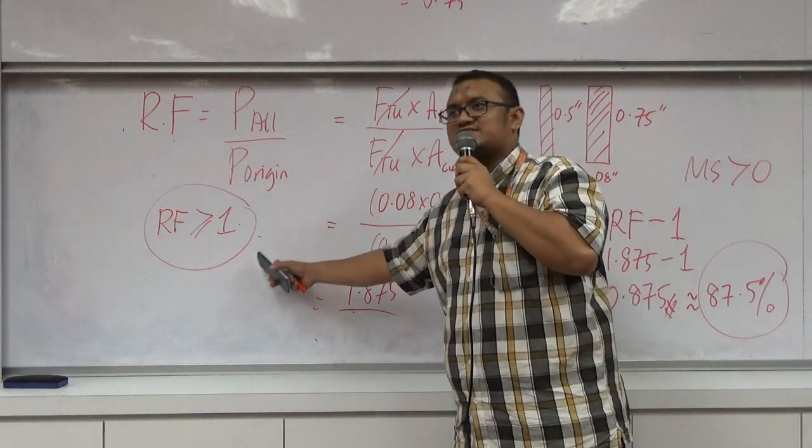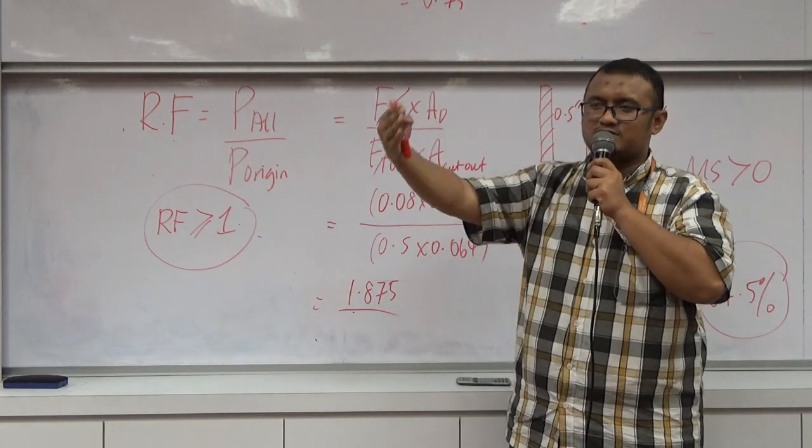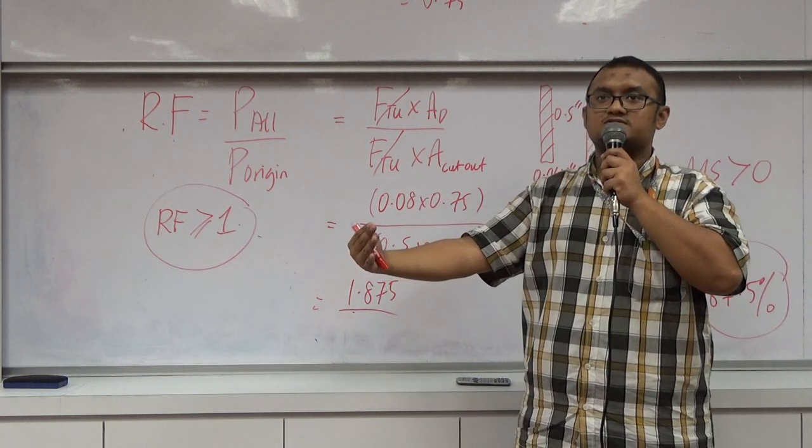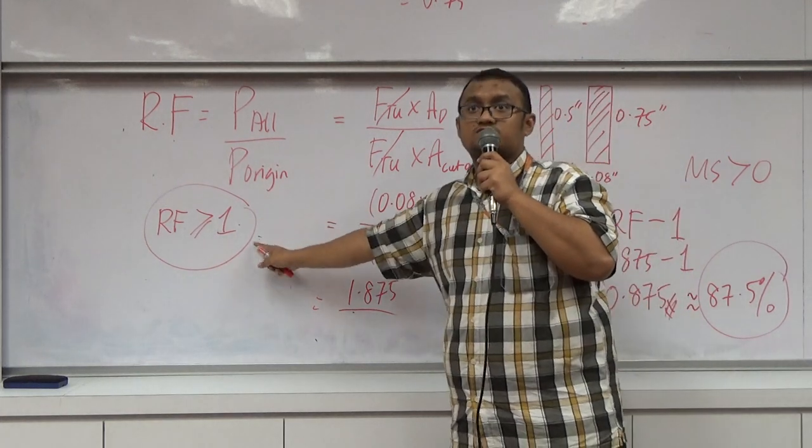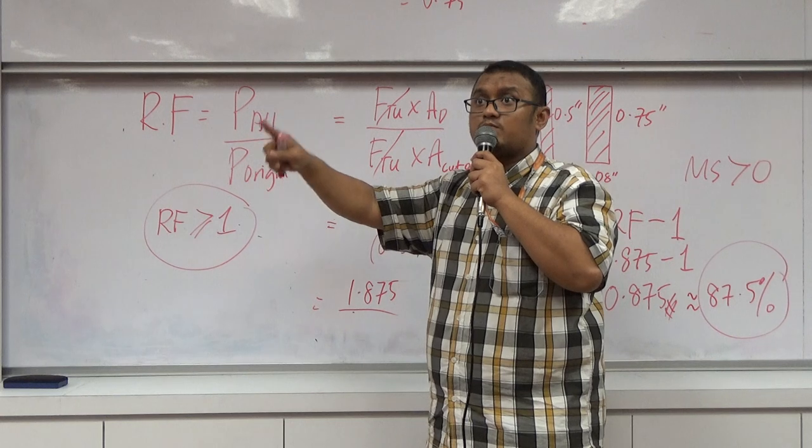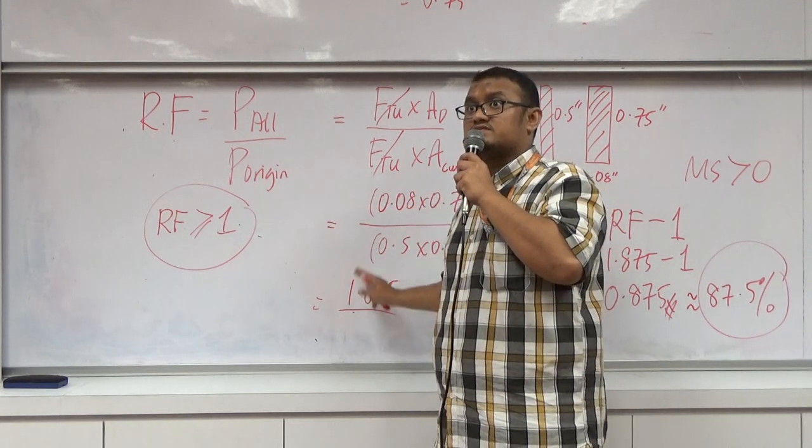Through reserve factor and margin of safety. There's no use you calculate load loss and then failure mode, determine the fastener, and then you don't show this one. This is the value that both OEM, Boeing and Airbus, requires: margin of safety and reserve factor.